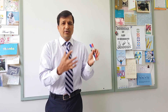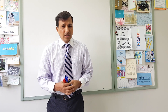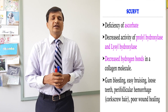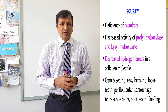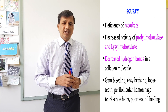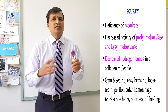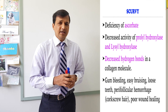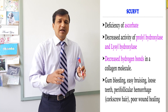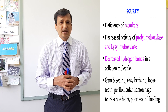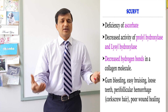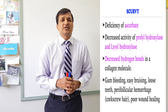Because of decreased activity of prolyl hydroxylase and lysyl hydroxylase, there is decreased hydroxylation in the pro-alpha chains of the collagen molecule, especially in the endoplasmic reticulum. This means decreased availability of hydroxyl-containing amino acids in the pro-alpha chain, leading to lack of hydrogen bond formation during pro-collagen assembly, resulting in improperly made collagen being synthesized.